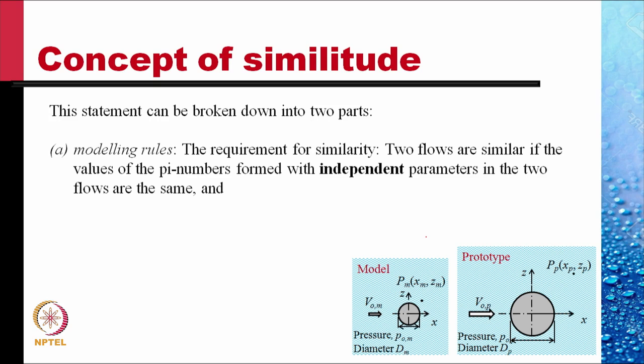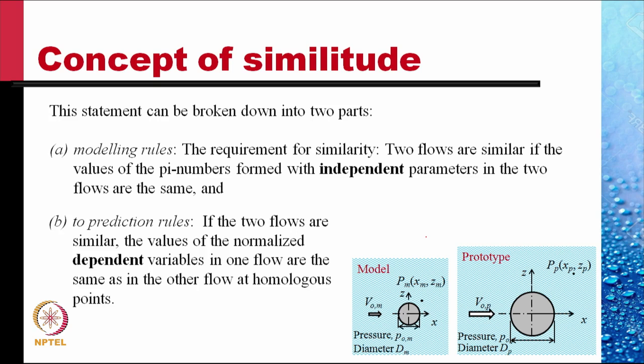This statement can be broken into two parts. A — the modeling rules: two flows are similar if the values of pi numbers formed with the independent parameters are the same in both flows. If the three groups of parameters have identical values in two flows (model and prototype), then we say the two flows are similar. B — the prediction rules: if the two flows are similar, the values of the normalized dependent variables in one flow are the same as in the other flow at homologous points — two points that bear a geometrically similar relationship to the boundaries of the flow.